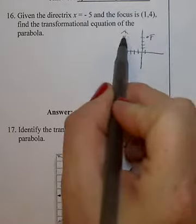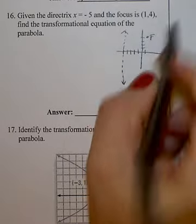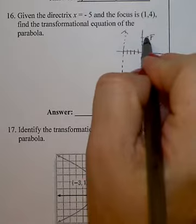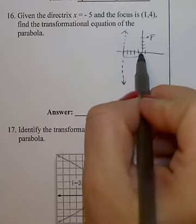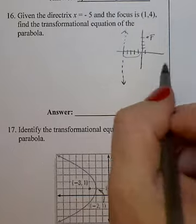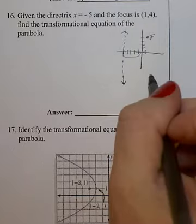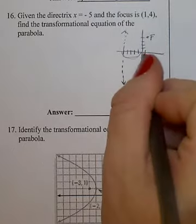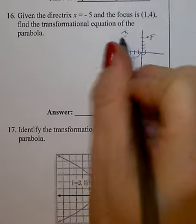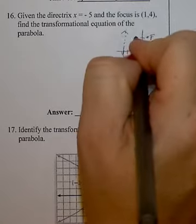Remember, directly in between the focus and the directrix will be the vertex. So this is a distance of 4. And, whoops, sorry. This is a distance of 5 and this is a distance of 1. So there's 6 in between there. So I can go 3 to the center and I'll find the vertex.